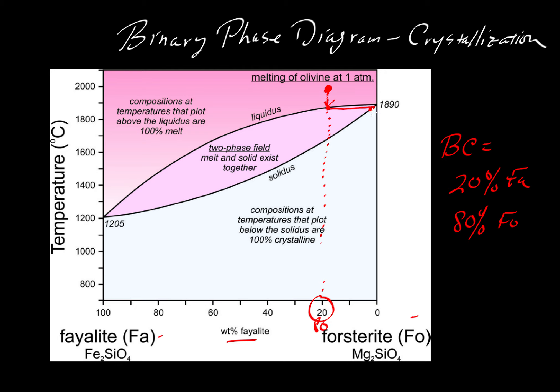We would find those crystals by drawing a horizontal line and then projecting that downward, and we would project downward to something that looks like it would be close to FO 98 or something like that. Something that's 98% forsterite, or about 2% on this weight percent fayalite scale.